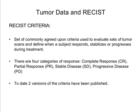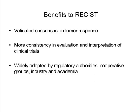There are four categories of response: Complete Response (CR), Partial Response (PR), Stable Disease (SD), and Progressive Disease (PD). To date, there have been two versions of criteria published. The benefits of using RECIST are that it validates consensus on tumor response, there is more consistency in evaluation and interpretation of clinical trials, and both versions have now been widely adopted by regulatory authorities, co-op groups, industry, and academia.